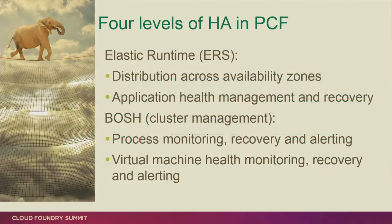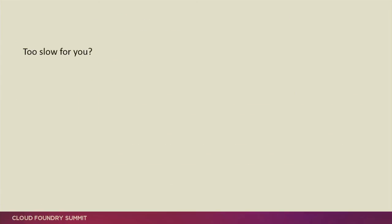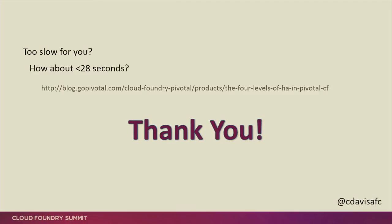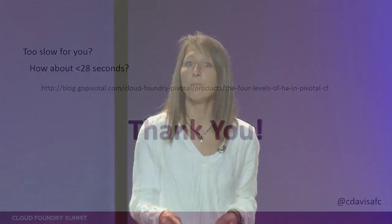So we have four levels: two in the Elastic Runtime and two down in BOSH. The fact that they're in BOSH means you get to take advantage of those not just for the Elastic Runtime, but also for Pivotal HD and anything else deployed with BOSH. If this lightning talk was too slow for you, I invite you to take a look at this blog — we do the same thing in less than 28 seconds. Thank you very much.